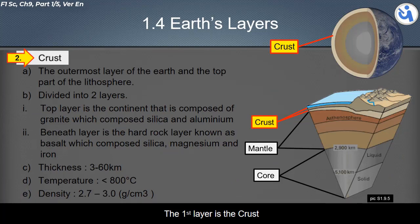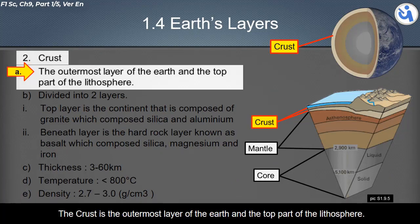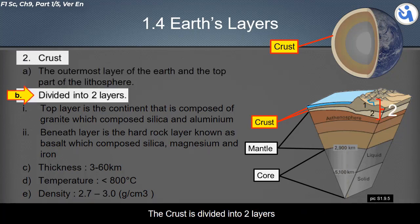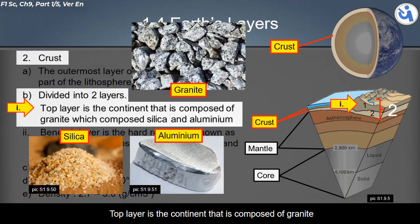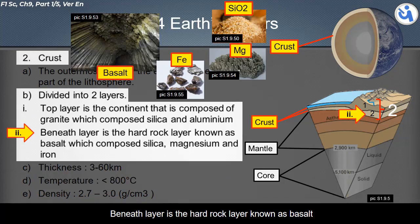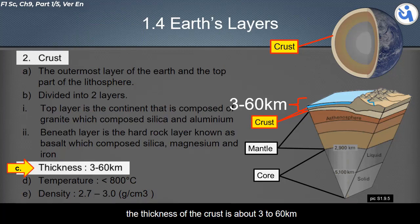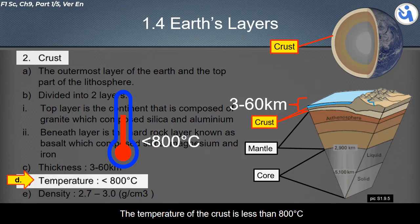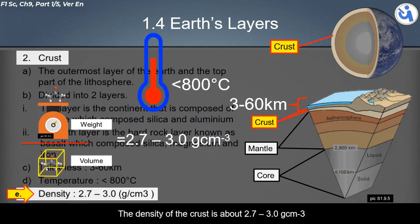The first layer is the crust, the outermost layer of the Earth and the top part of the lithosphere. The crust is divided into two layers: the top layer is the continent composed of granite (silica and aluminium), and beneath it is a hard rock layer known as basalt (composed of silica, magnesium, and iron). The thickness of the crust is about 3 to 60 kilometers, its temperature is less than 800°C, and its density is about 2.7 to 3.0 g/cm³.